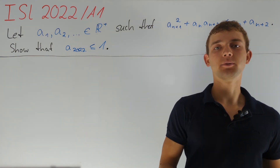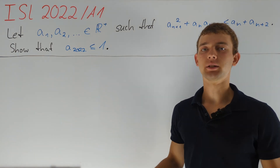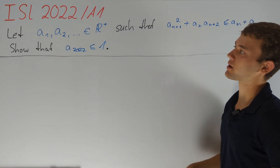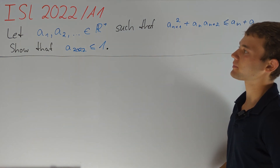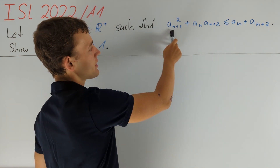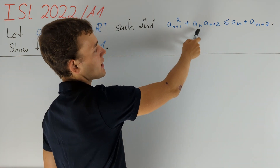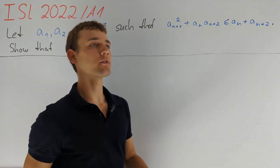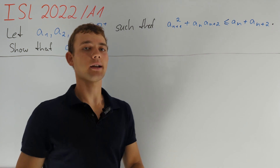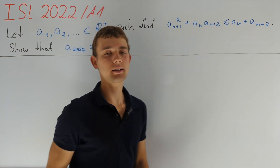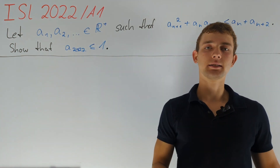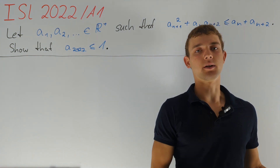Today we consider a sequence of positive real numbers from the IMO shortlist 2022 problem A1. We are given that aₙ₊₁² plus aₙ times aₙ₊₂ is less than or equal to aₙ plus aₙ₊₂, and we are asked to prove that a₂₀₂₂ is less than or equal to one.